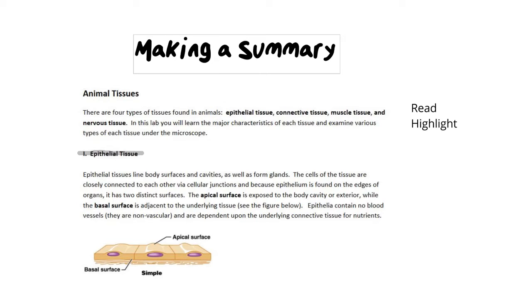So the epithelial tissues line the body, surfaces and cavities. This tells us where we find them and we also find them in the form of glands. The cells of the tissues are closely connected to each other via cellular junctions. And because epithelium is found on the edges of organs, this is telling us also where we find them, it has two distinct surfaces. It has the apical surface, which is exposed to the body cavity. We want to highlight that. While the basal surface is adjacent to the underlying tissue. And they have given you a figure below so that you can see this apical on the surface and basal on the bottom. It says that epithelia contain no blood vessels. In other words, they are non-vascular and they are dependent on the underlying connective tissues for nutrients.